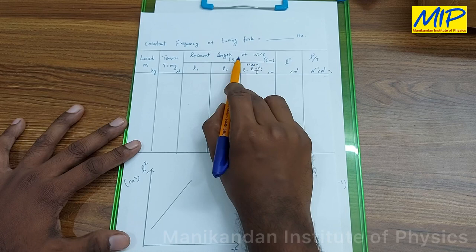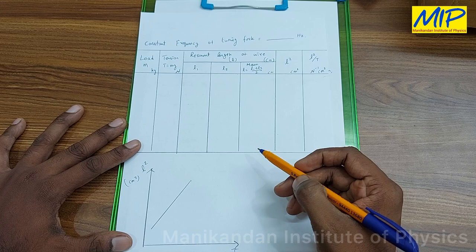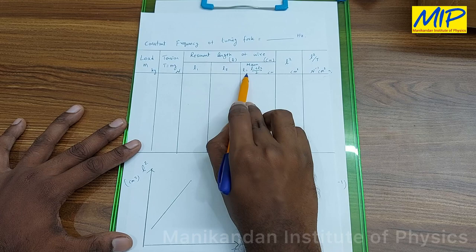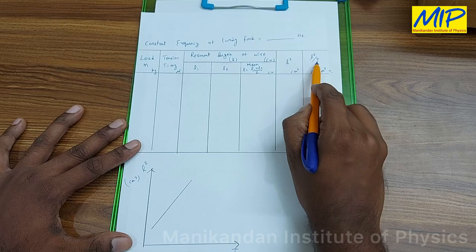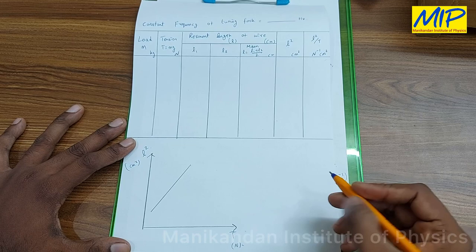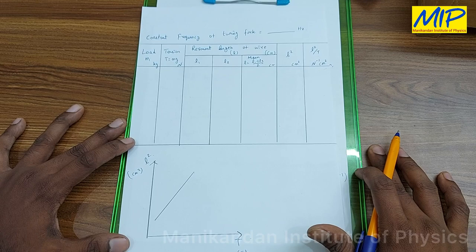At the resonant length between the two knife edges, the vibration of the string is maximum — that is the resonance condition. L1 is trial 1, L2 is trial 2. Taking the average of these two gives the resonant length of the wire. Squaring this gives L², and dividing by T gives L²/T. If I plot a graph between L² and T, I get a straight line.